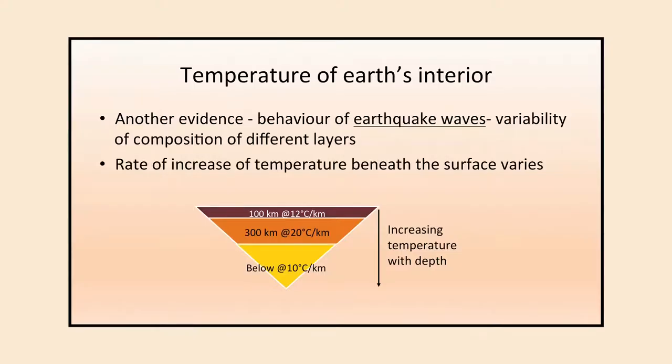Another evidence to show the different constituents of Earth's interior is the behavior of earthquake waves. With the help of earthquake waves we can find that different kinds of material are present inside — some denser, some less dense. The manner in which earthquake waves are deflected shows the temperature of Earth's interior. The rate of temperature increase varies: for the upper 100 km it is 12°C per km, for the next 300 km it is 20°C per km, and below that it is 10°C per km.